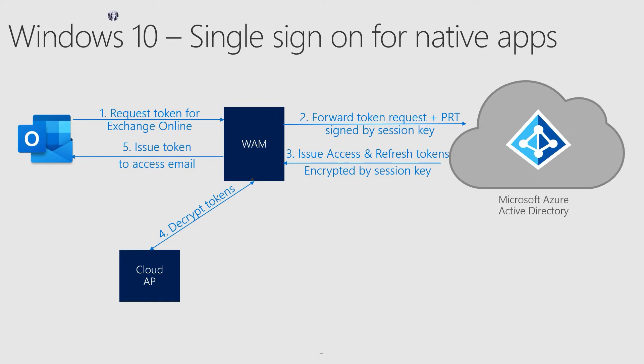An important call out here is that WAM only provides the applications with the access token and not the refresh token. The refresh tokens are securely encrypted and stored by WAM to prevent unauthorized access. When the application needs a new access token, WAM uses that refresh token to request an access token in place of using a PRT.